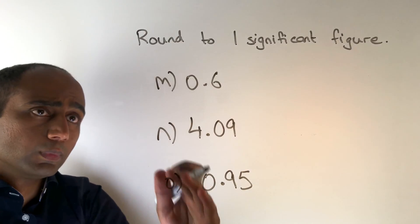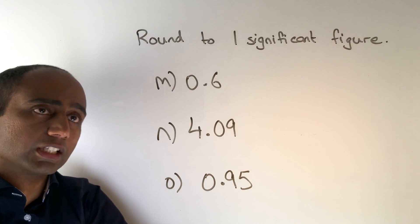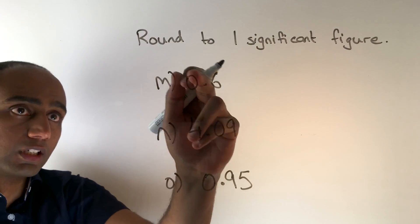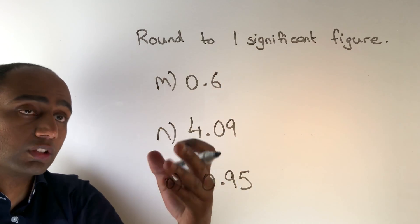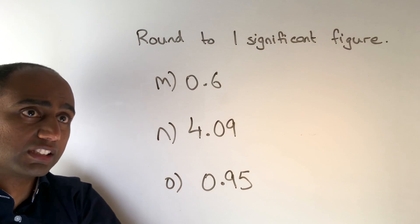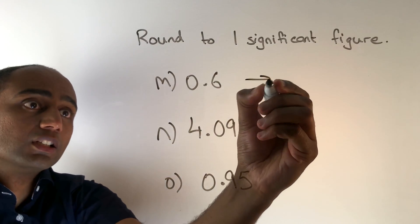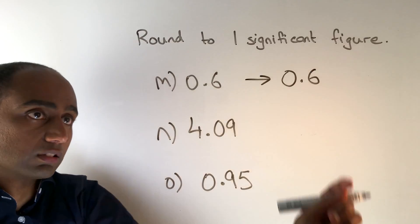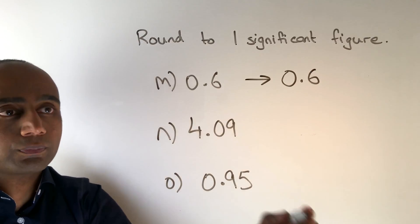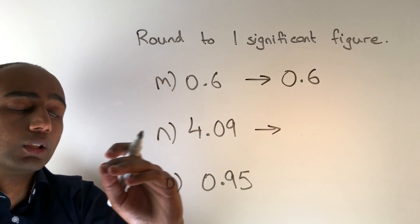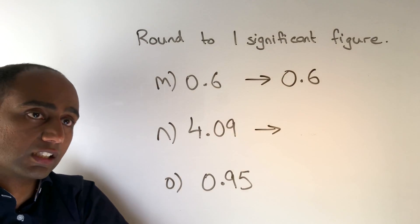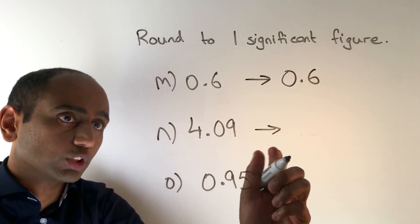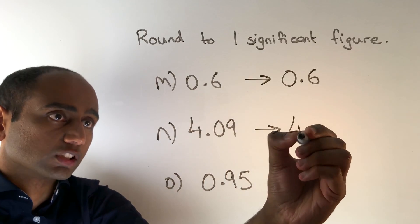In question M we need to round 0.6 to one significant figure. The biggest place value column here is the tenths column — remember we haven't got any units so they don't count — and we need to round that to the nearest tenth. Well, we can't round it further; it's already only got one decimal place. So this is simply 0.6 to one significant figure. In N we've got the units as our biggest place value column, so we want to round to the nearest whole number. 4.09 to the nearest whole number is just 4.